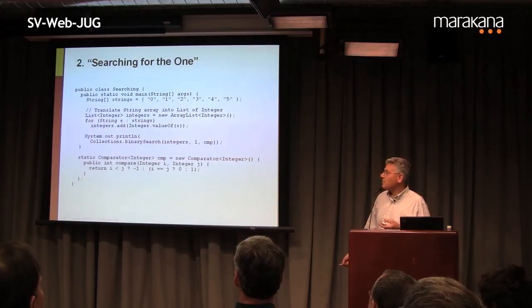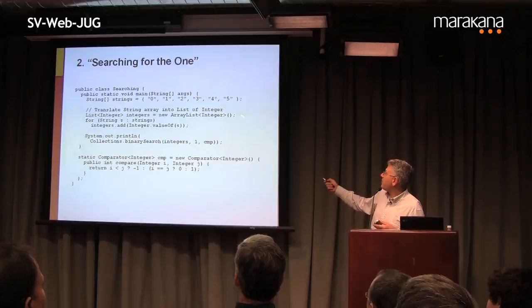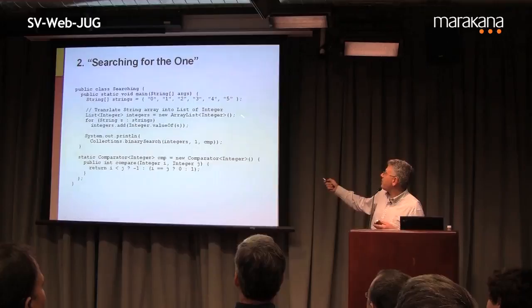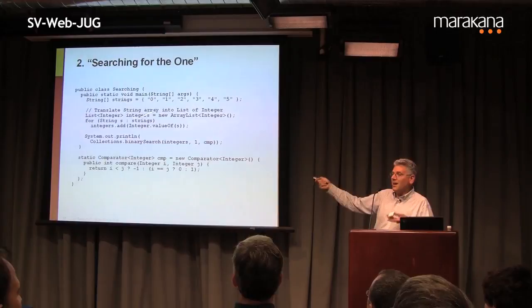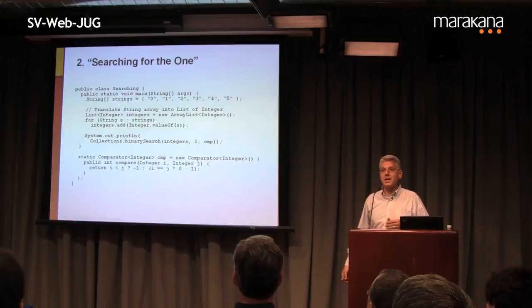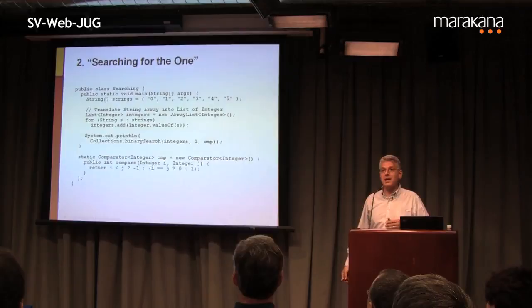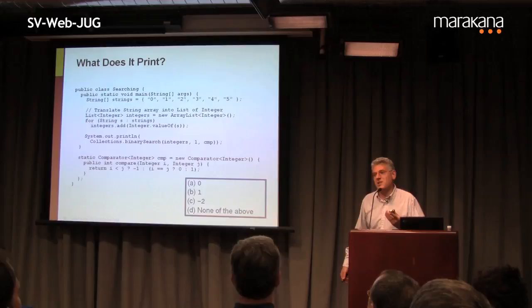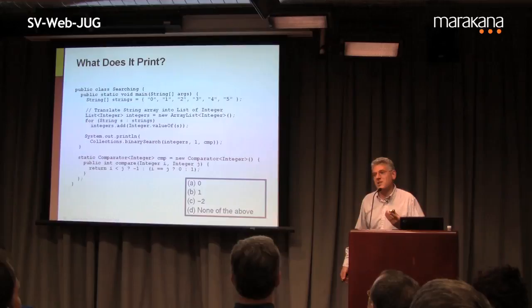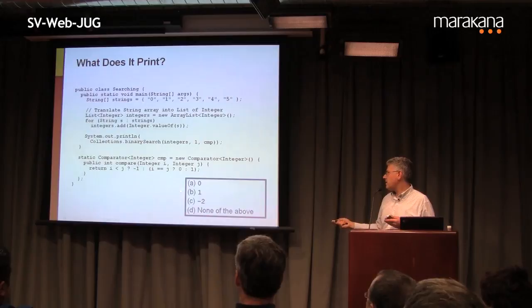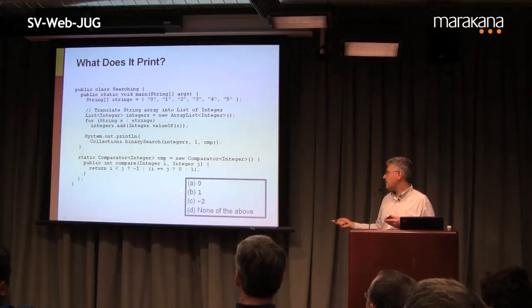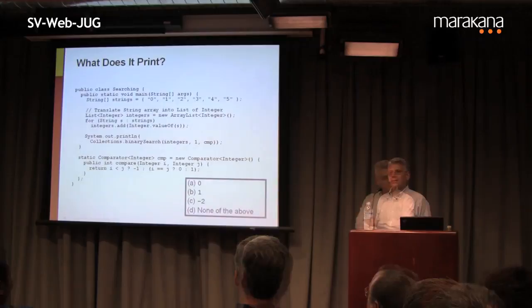The binary search method returns the index at which it finds the element. If it found 1 at index 1, it would print 1. If it doesn't find it, it returns the bitwise complement of the position at which you would insert it — because negative 0 equals 0. So choices are: 0, 1, negative 2, or none of the above. Take a moment to think about it.